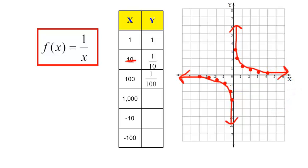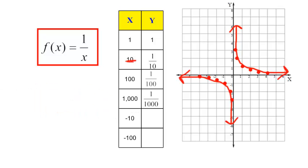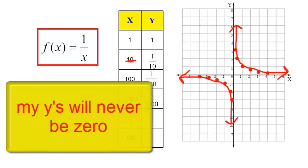We can just keep on doing this. If x is 1,000 and I plug in 1,000, y is 1 thousandth. I get really, really, really close to 0, but I will never touch 0. My y will never get to 0.